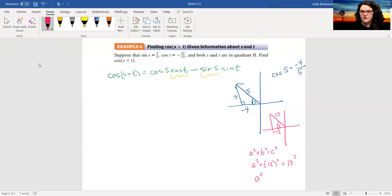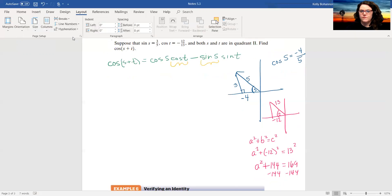So a squared equals, sorry, a squared plus 144 equals 169. Subtract 144 from both sides and that gives me that a squared is 25, which means a is 5, which by the way is another Pythagorean triple. I just didn't know if y'all knew all of them.